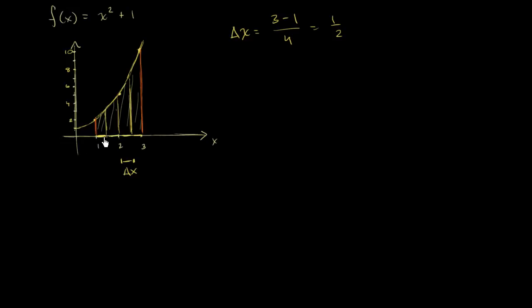So for example, this first interval — the boundary between the first rectangle and the second — is going to be 1.5. Then we go one half to 2, then we go to 2.5, and then we go one half to 3.